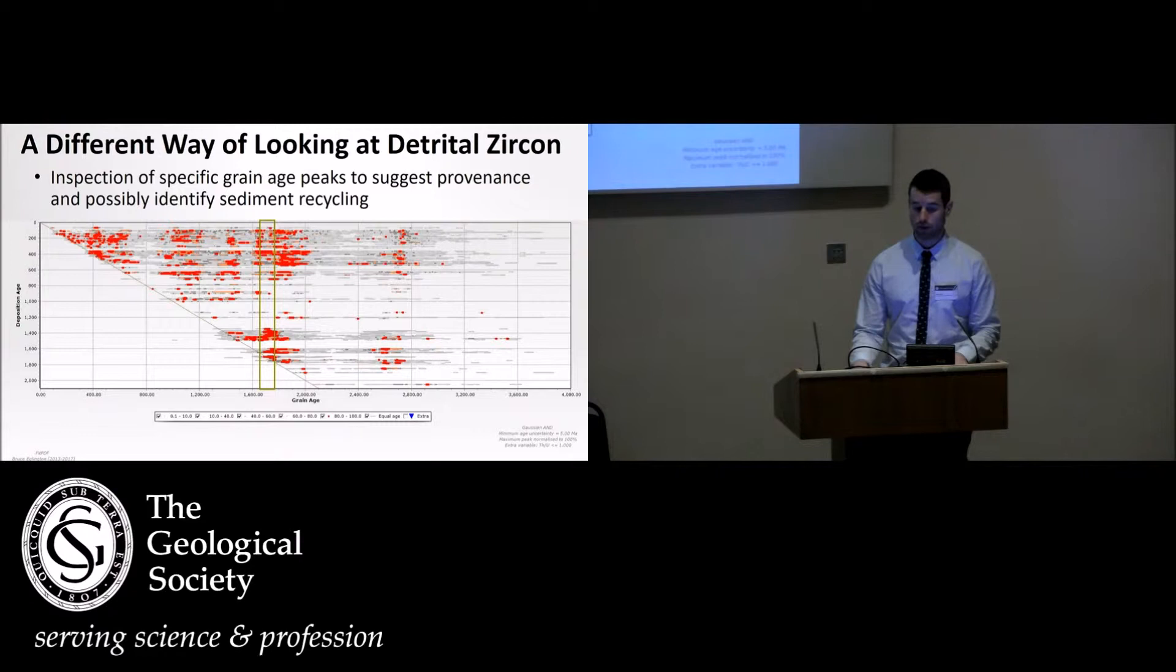A different way of looking at the detrital zircon data is inspecting specific grain age peaks. Rather than looking at a sample and trying to analyze where all of the grain ages come from at the same time, we can look at a specific grain age peak and try to figure out where those samples came from just for that grain age. And I should also mention that we can possibly identify sediment recycling.